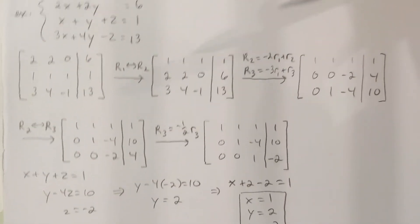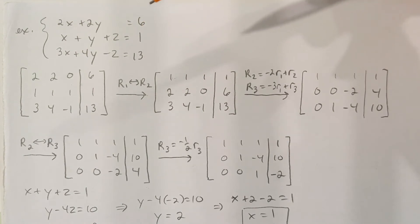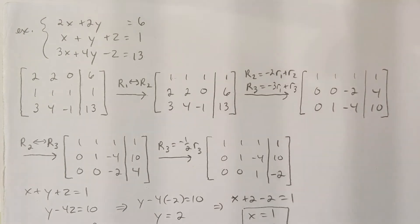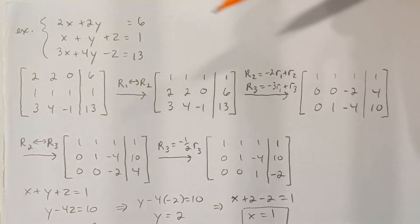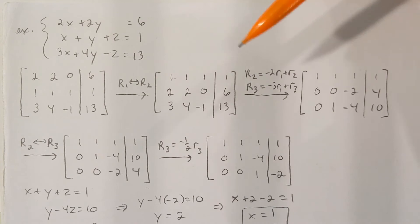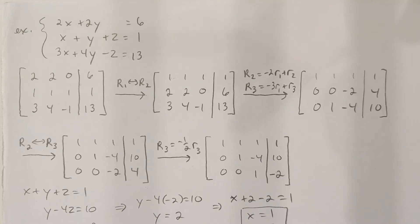The reason matrices is your best option for a 3x3 or bigger system is because in section 6.3, when doing things with 3x3 systems, the plan was to use the elimination method repeatedly. That's an okay method, but matrices is going to be faster because you're just using the coefficients rather than writing down equations all the time. In general, if it's a 3x3 or bigger, you'd want to go with matrices.